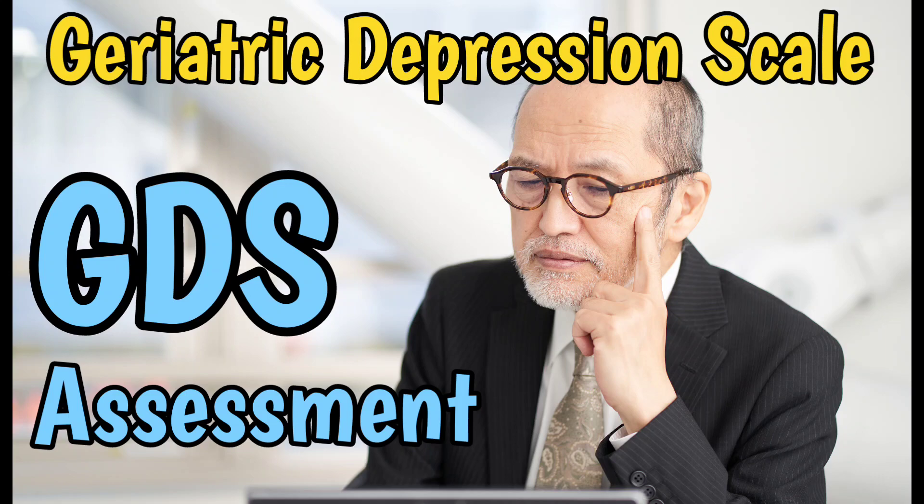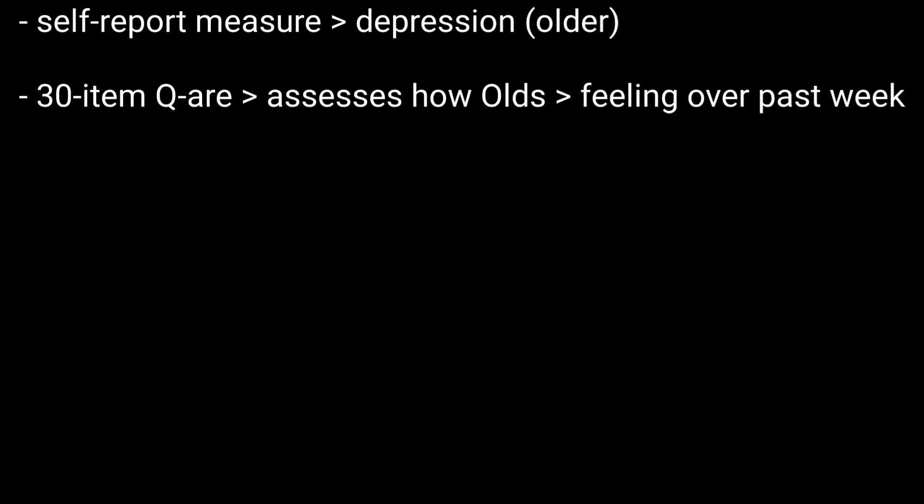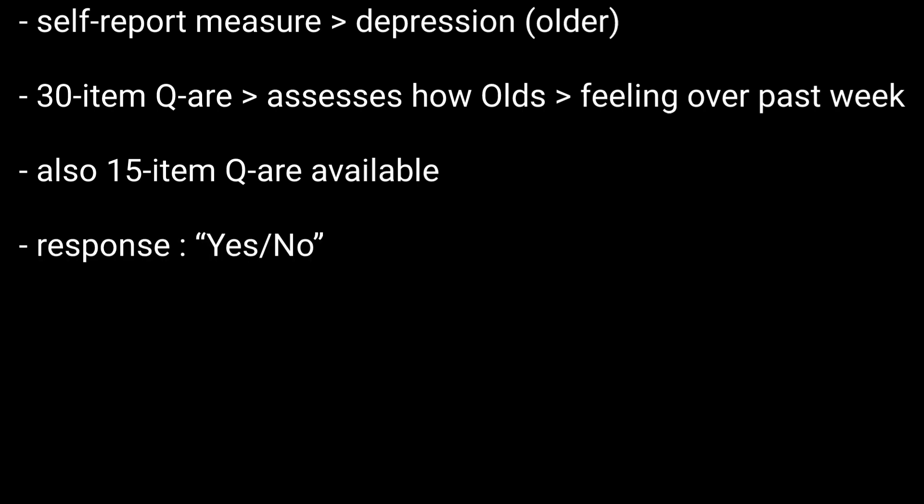Geriatric Depression Scale Assessment. The GDS is a self-report measure of depression in older adults. It is a 30-item questionnaire that assesses how elderly patients have been feeling over the past week. There is also a shorter 15-item questionnaire. Users respond in a yes/no format.